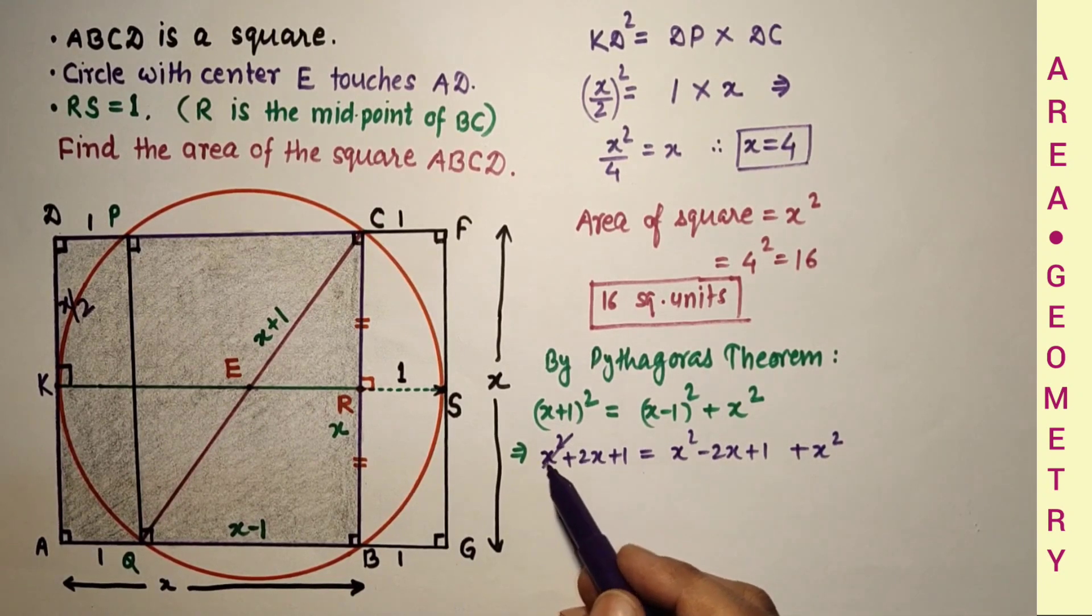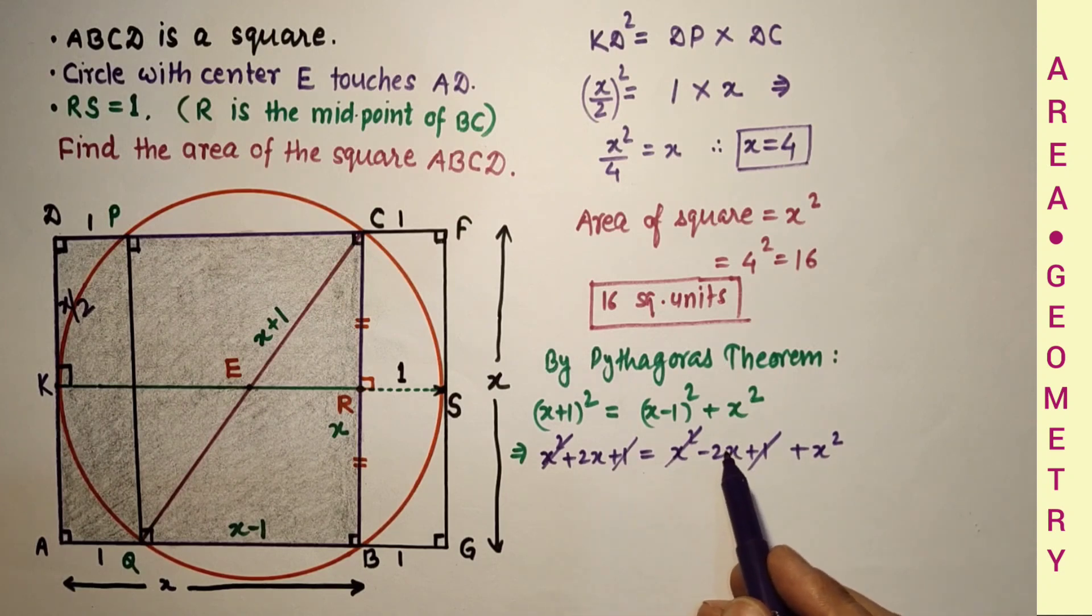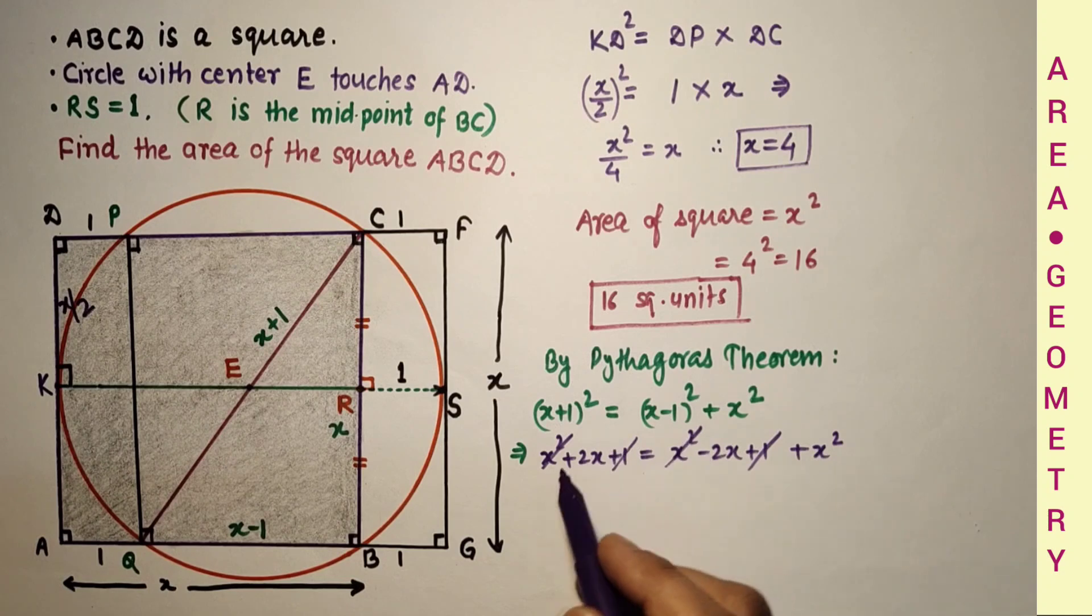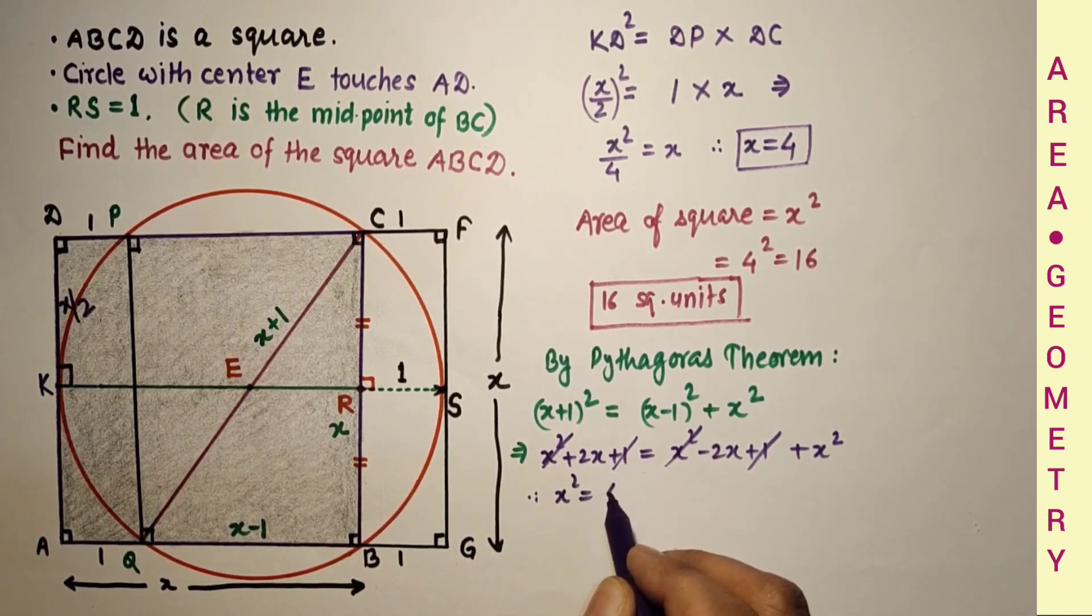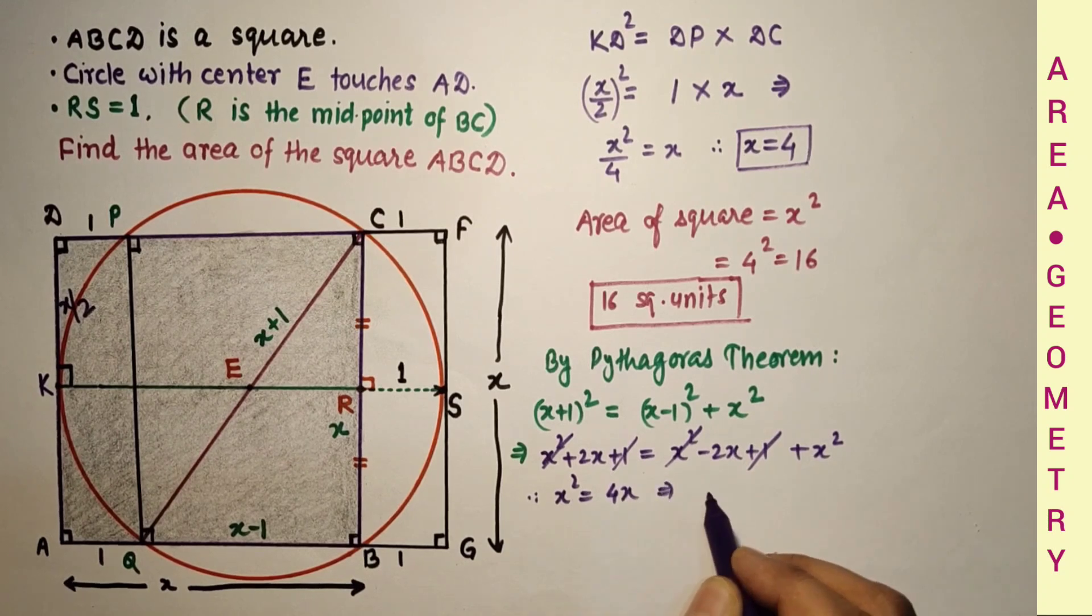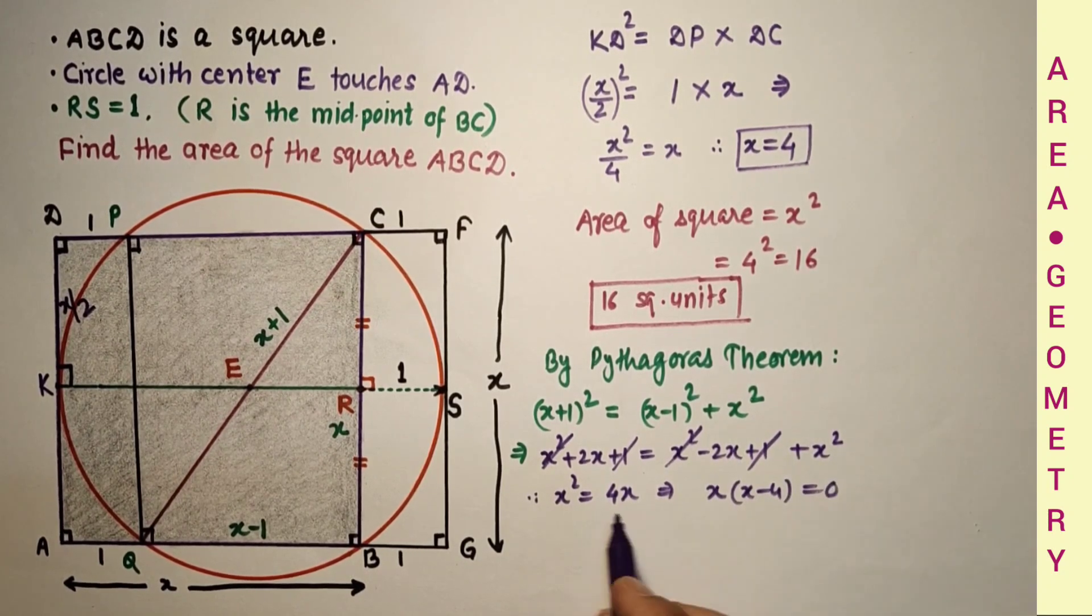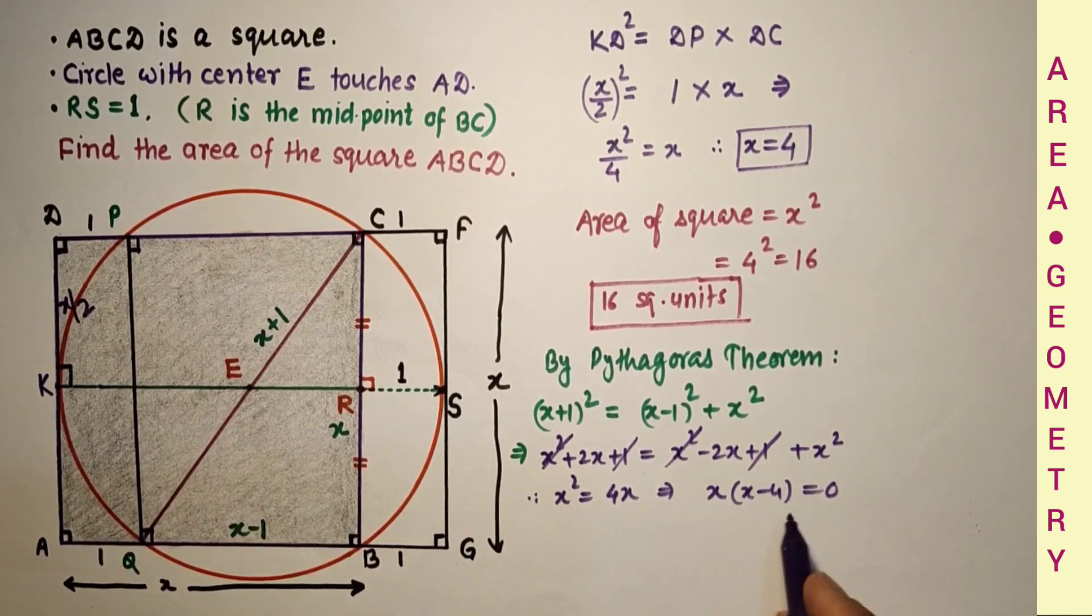X square X square cancelled, plus 1 plus 1 cancelled. This minus 2X, if we transpose to left will be 4X. So X square equals 4X, so X times X minus 4 is 0. X cannot be 0, so therefore X is 4.